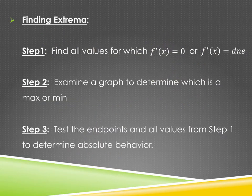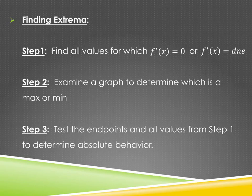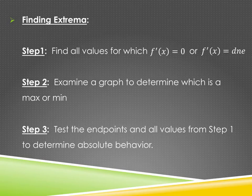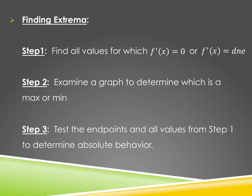When finding extrema in general, the first thing to look for is all the values where the derivative equals zero or the derivative does not exist. In section 4.2 we stopped at step two — examining the graph to decide if it was a max or min. Step three is the new part: test the endpoints and all the values from step one to determine which is the absolute max and/or absolute min.